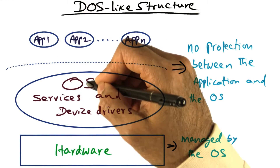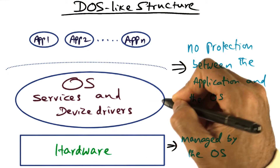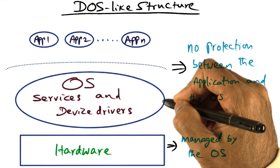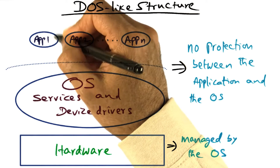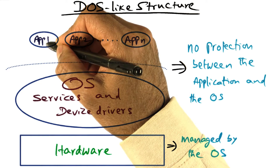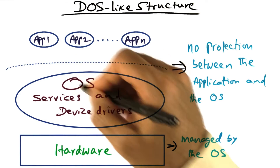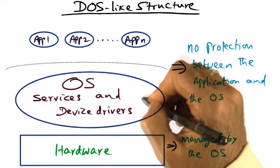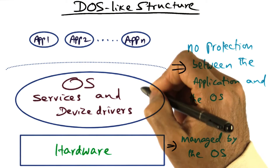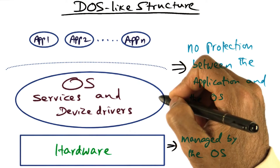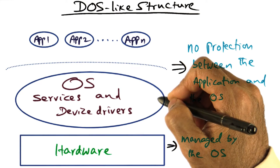The integrity of the operating system can be compromised by a runaway application, either maliciously or unintentionally corrupting the data structures that are in the operating system.